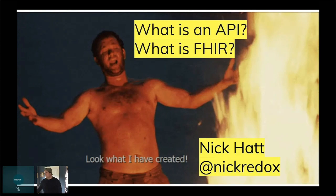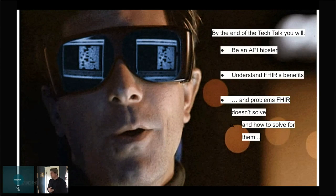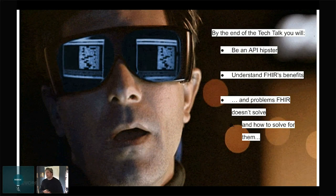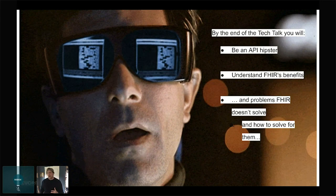I have a few goals for what I want to get out of this talk. There's a lot of resources out there for what an API is and what FHIR is. I have a certain take on it, and I'm here to share my take. Hopefully, you'll be a little bit more of an API connoisseur by the end of this. I'm going to get into what I see as the benefits of FHIR — it's pretty technical. And then meditate a little bit on the problems that FHIR doesn't solve and what the industry needs to do to solve for them.